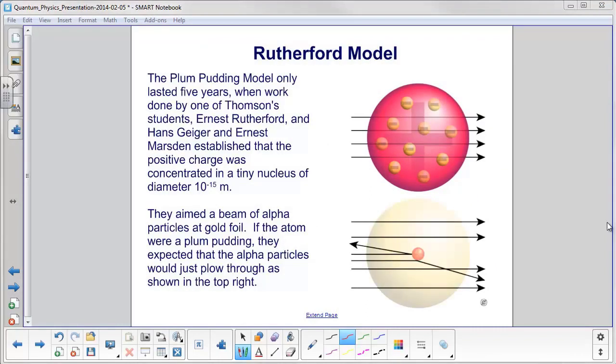The plum pudding model only lasted five years, and what was pretty interesting about it is that the work done by one of Thompson's own students, Ernest Rutherford, and then Hans Geiger and Ernest Marsden, established that the positive charge of this model was concentrated in a tiny nucleus of diameter 10 to the minus 15th meters. So instead of this whole amorphous blob here, you would have the positive charge concentrated right there in the middle.